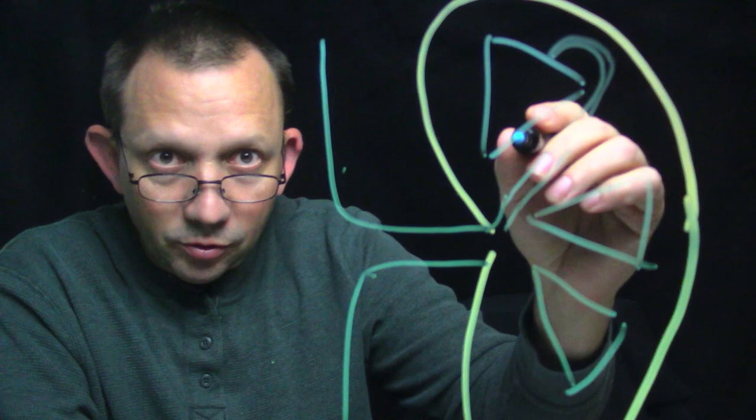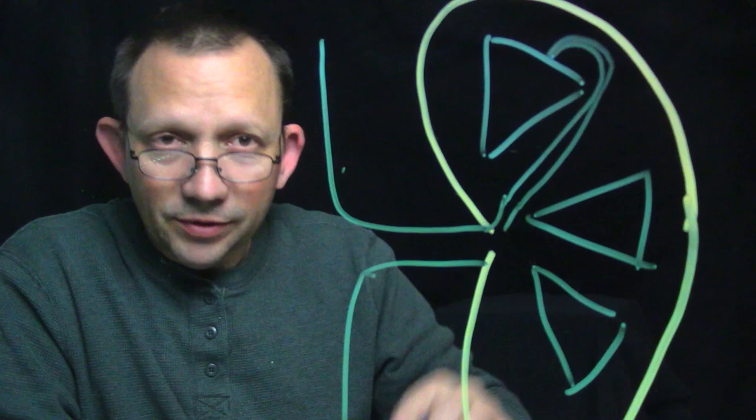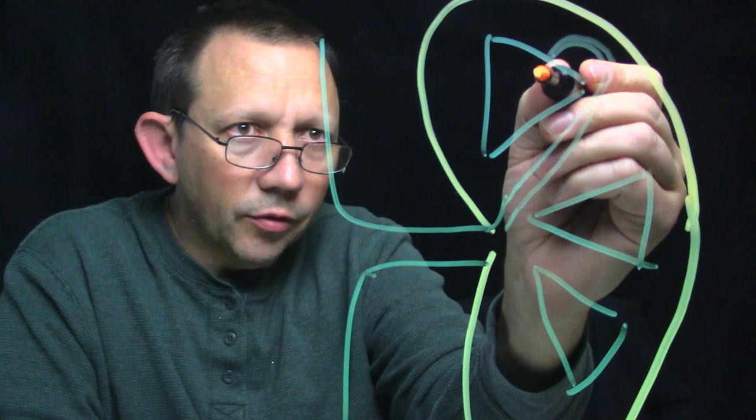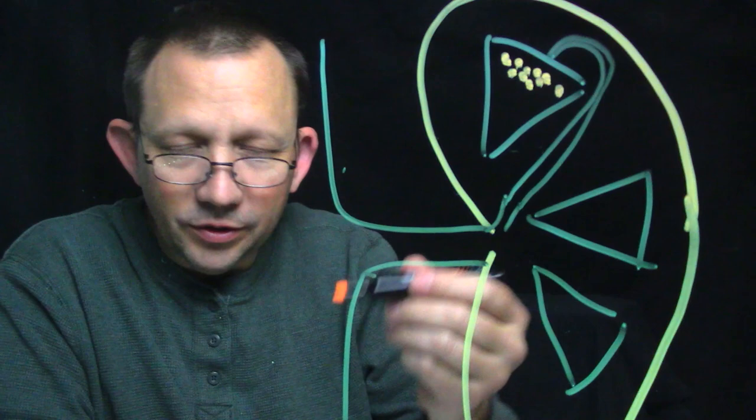From there we're going to go to a place called the Bowman's capsule, which is where the glomerulus is, and we're going to draw that whole thing out. The Bowman's capsule actually covers the glomerulus. The glomerulus is a little tiny bit of capillaries — little capillary knots up in there.